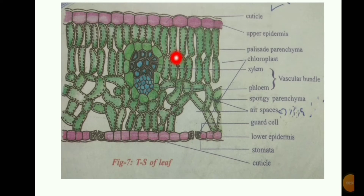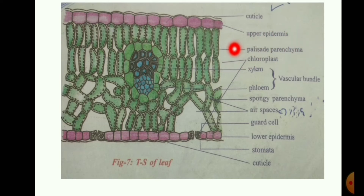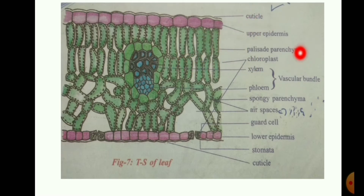Observing this leaf, the upper side is palisade parenchyma. The palisade parenchyma consists of chloroplast cells and has a dark green color. Below that is the spongy parenchyma, which also contains chloroplast cells but is light green in color.